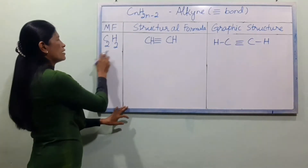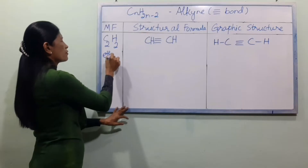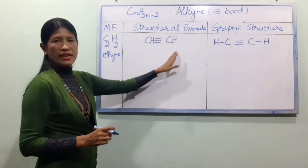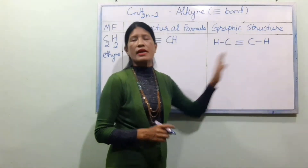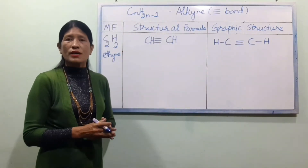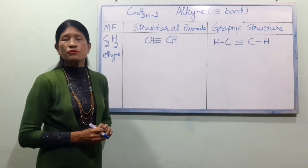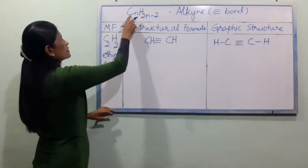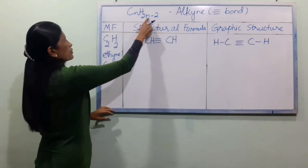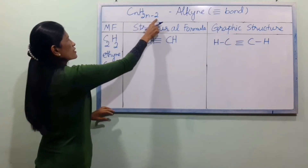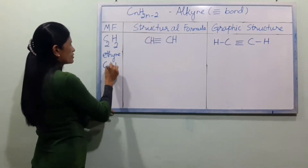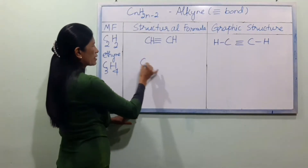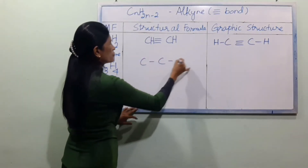The naming system functions for alkynes and we use the suffix YNE. The system provides EDHYNE. This is C3, which is a hydrocarbon. The structural formula numbering is 1, 2, 3.